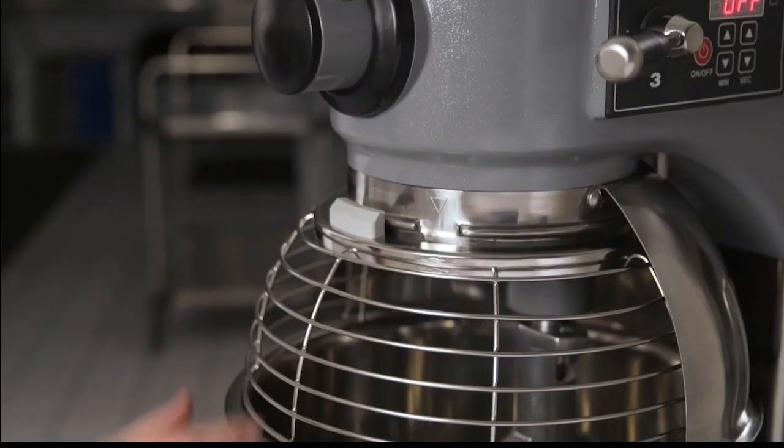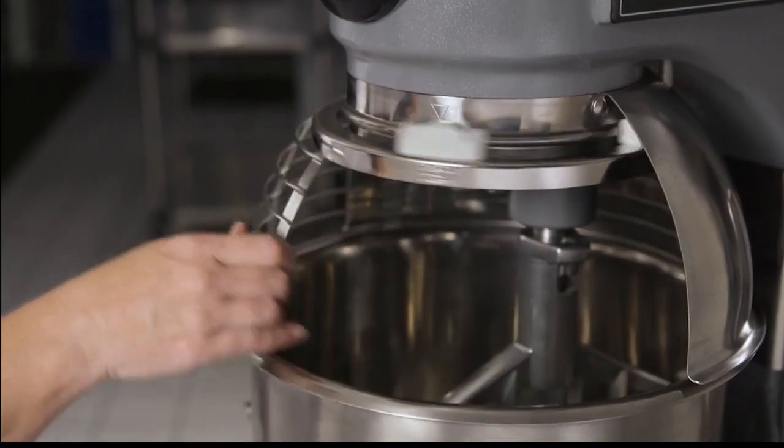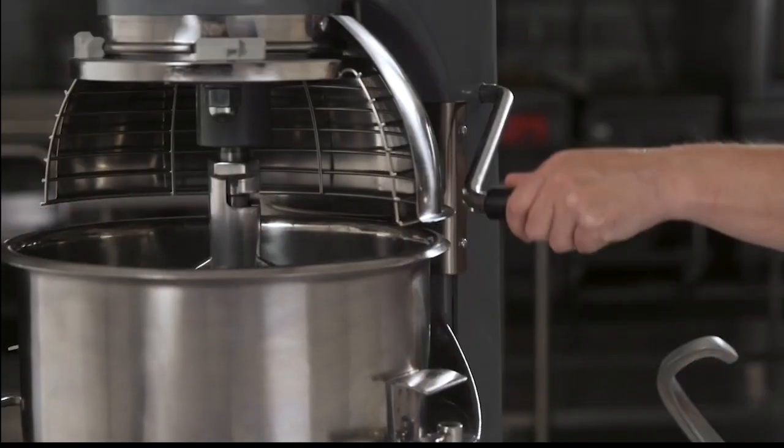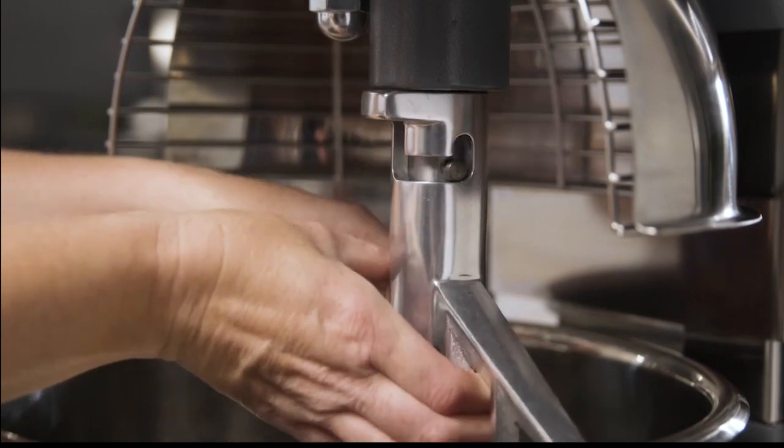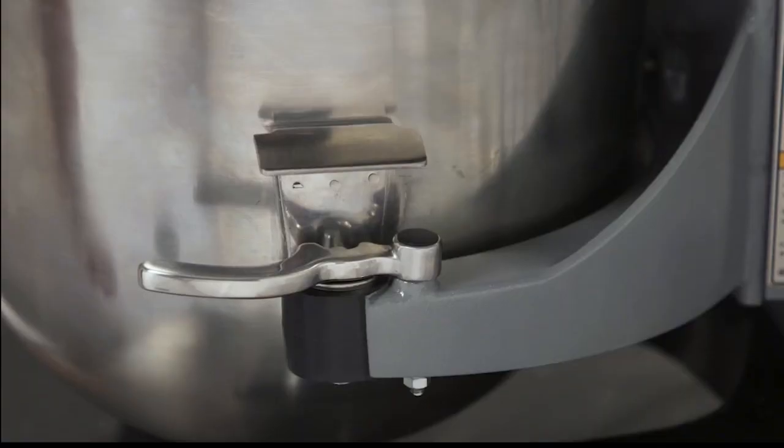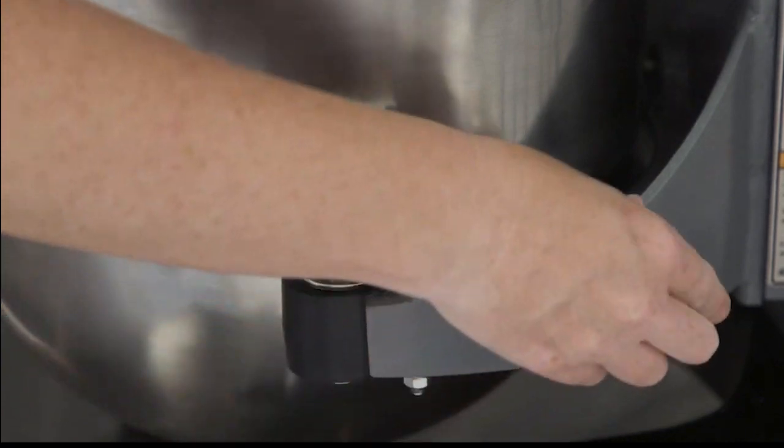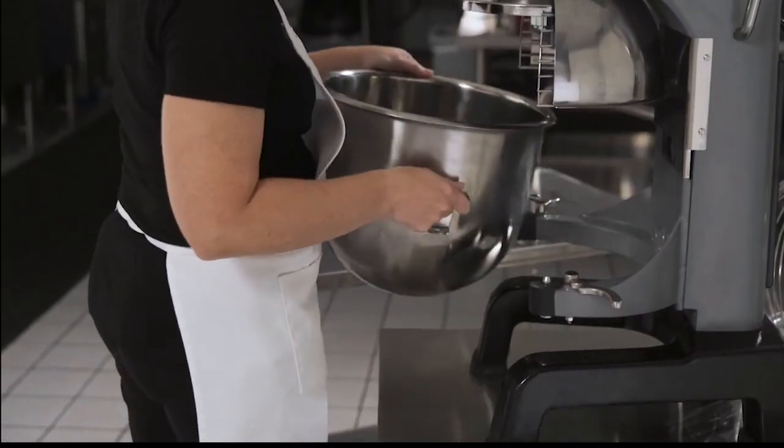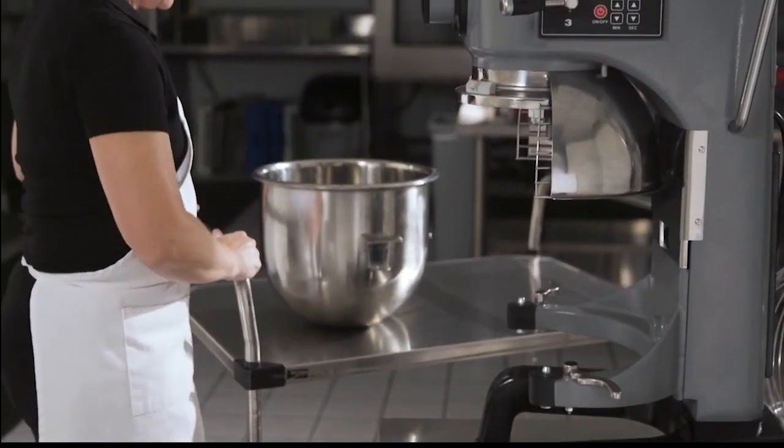Unloading is a snap. Or actually a series of short steps. Open the bowl guard wire cage assembly. Lower the bowl support. Remove the agitator. Open the bowl clamps. Lift the bowl off the pins and remove from the bowl support.